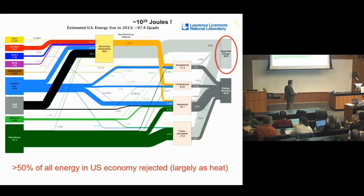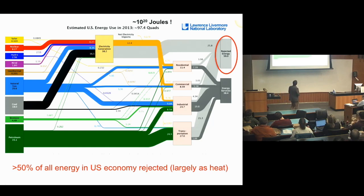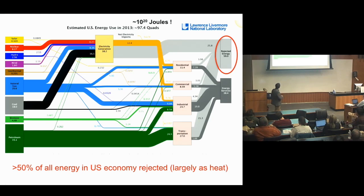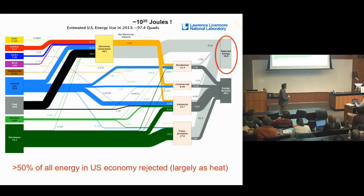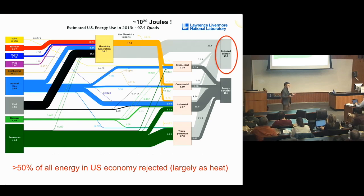This is important in a broader context of energy usage in our society and how materials can help us achieve a more sustainable economy. This chart, compiled every year by Lawrence Livermore National Lab, shows what happens to the energy that enters the economic system. More than half of the energy that comes in is actually rejected in the form of heat - it's lost energy. If we could have better materials and better transfer processes, we could improve the efficiency of our overall economy and achieve a more sustainable society.